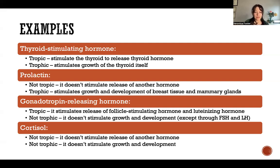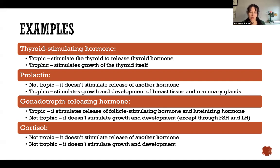Prolactin is an example of a hormone that is not tropic. It doesn't stimulate the release of another hormone, but it is trophic because it stimulates growth and development of breast tissue and the mammary glands.